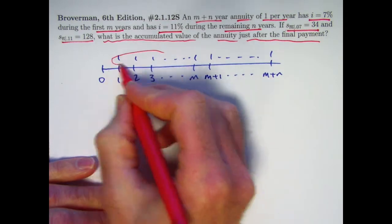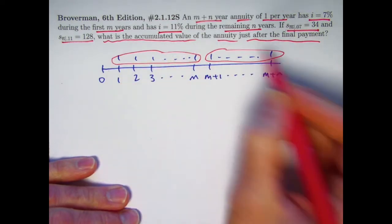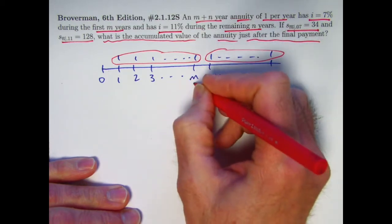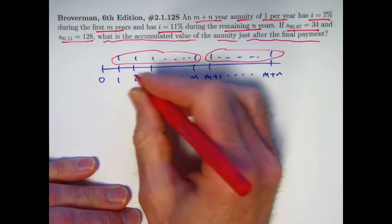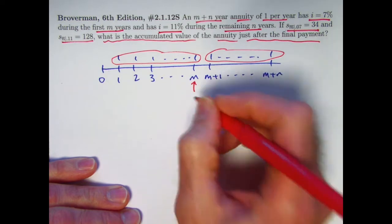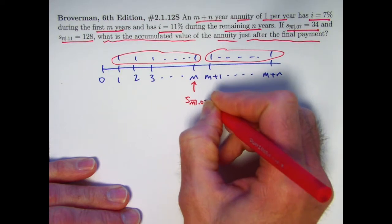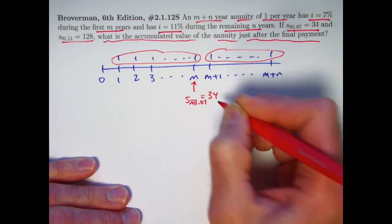Based on what we're given, we're going to want to think about breaking these apart into two different income streams. When the 7% interest rate is valid, we find the future value of the first group of N payments immediately after the last payment. That's S_N with the 7% interest rate. That is 34.